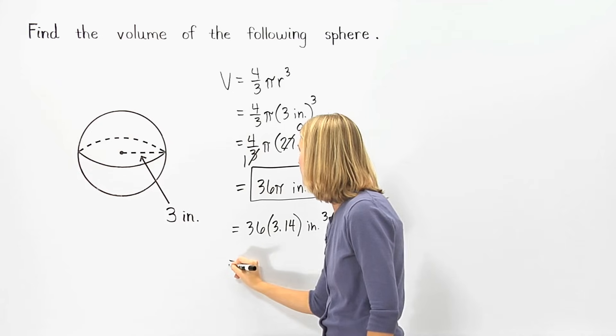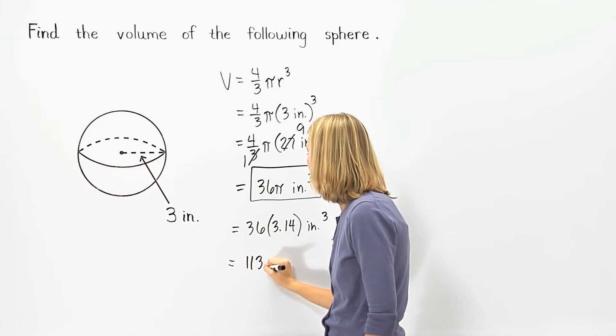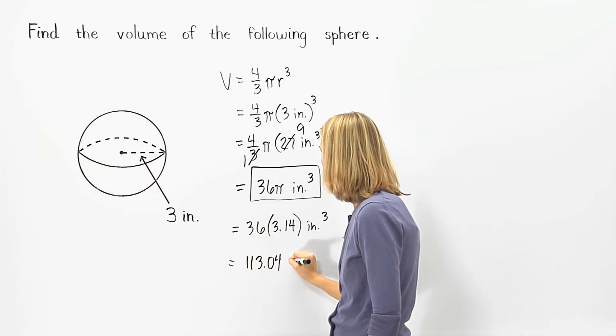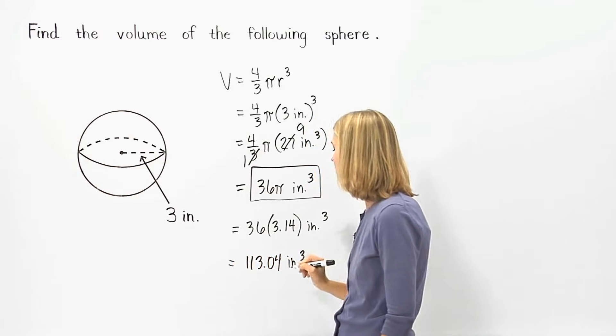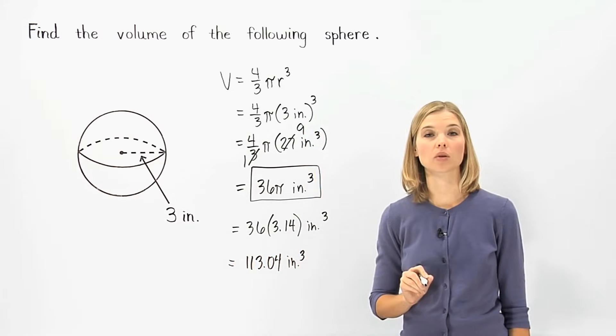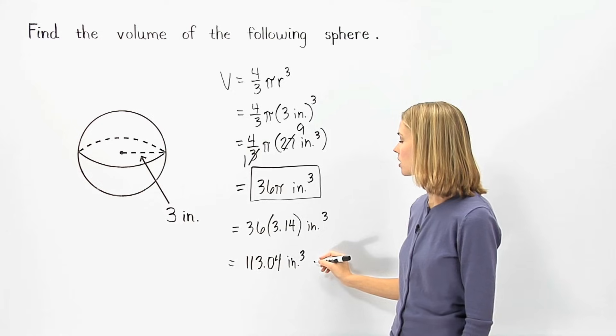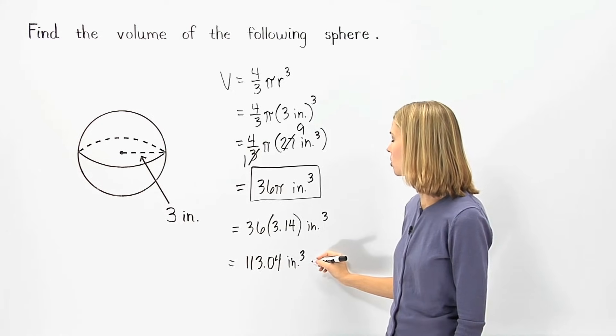This equals one hundred thirteen point zero four inches cubed. So another way to write the volume of the given sphere is one hundred thirteen point zero four cubic inches.